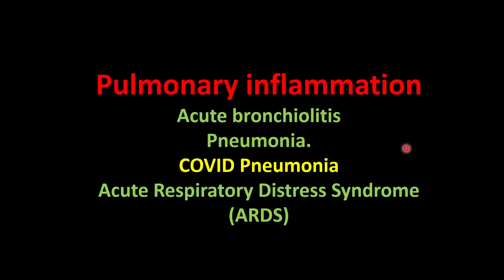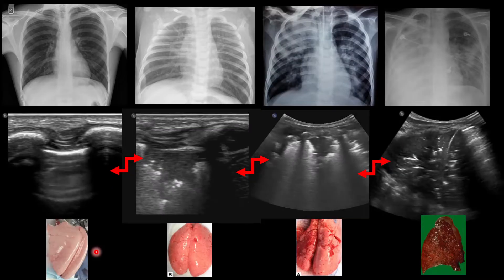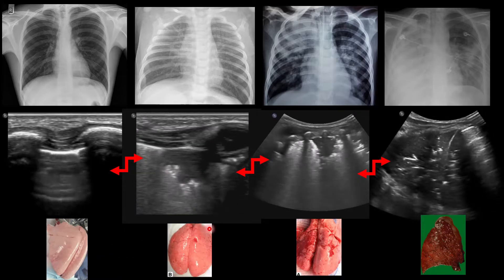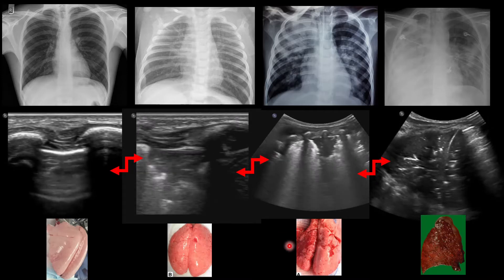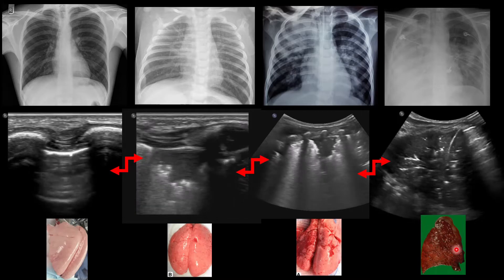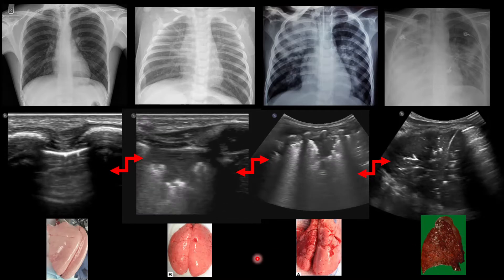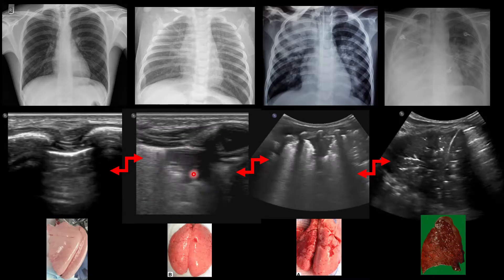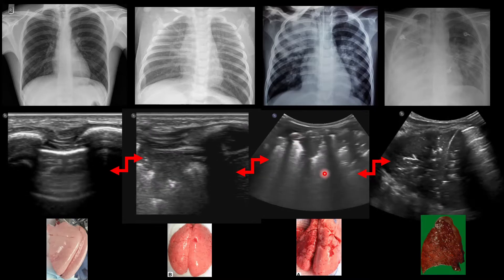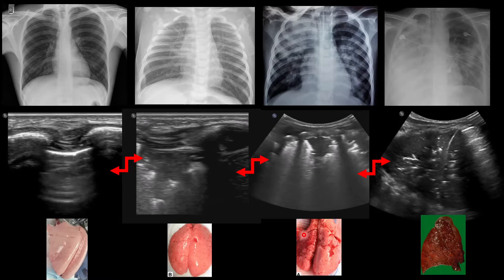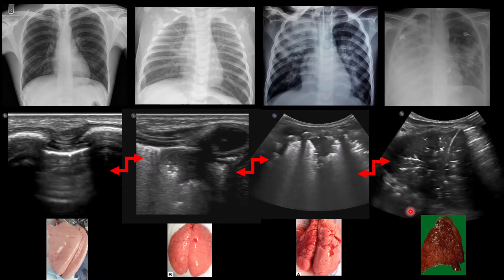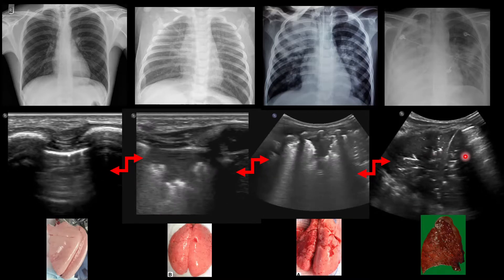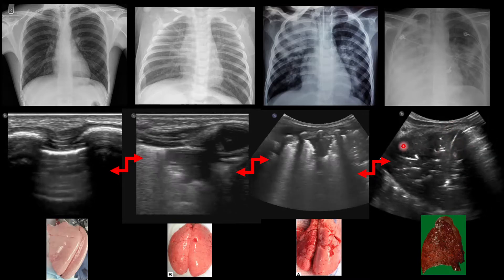Lung ultrasound is also useful in assessing pulmonary inflammation such as bronchiolitis, pneumonia, and ARDS. The key finding is consolidation. On ultrasound, a small patch signifies mild consolidation; as the patches increase in size and number, severity increases. If the whole lung becomes one large patch, it represents lobar pneumonia. Progression can be tracked from left to right on serial scans, and improvement can be seen moving from right to left.